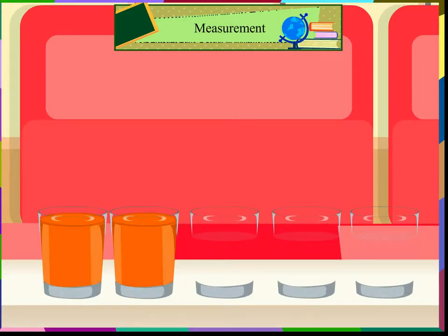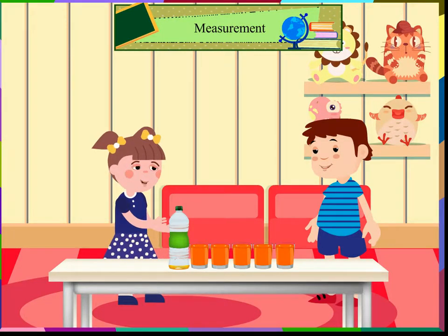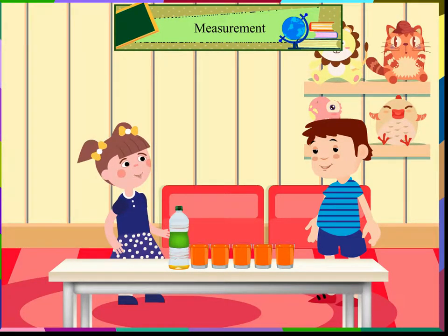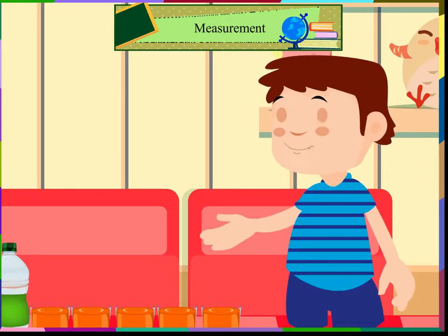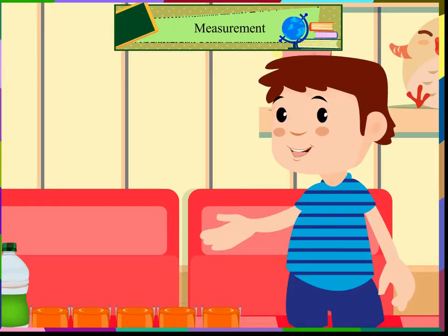1, 2, 3, 4 and 5. This bottle contains 5 glasses of juice. That means the capacity of this bottle is equal to 5 glasses.